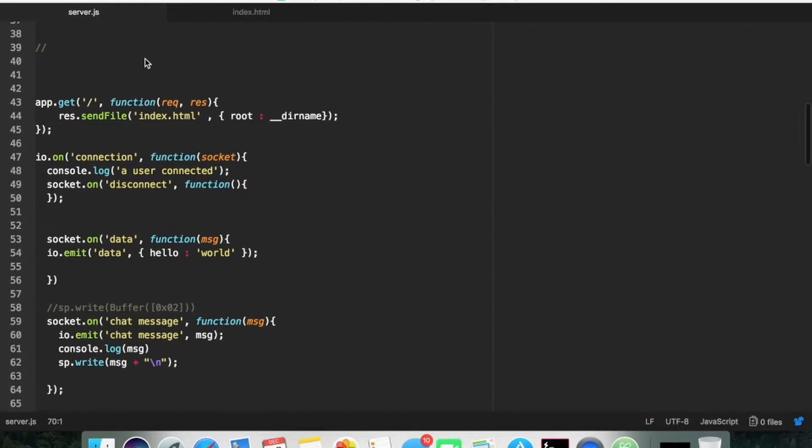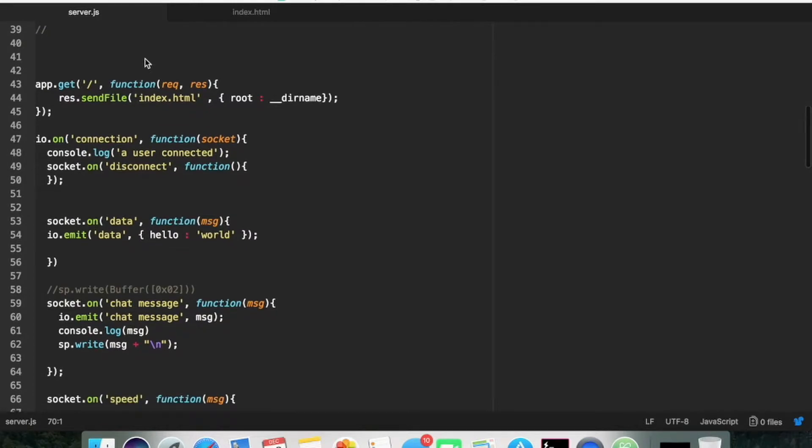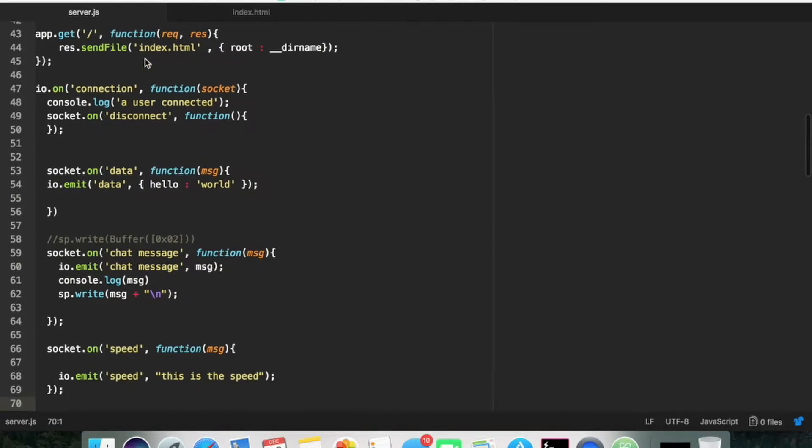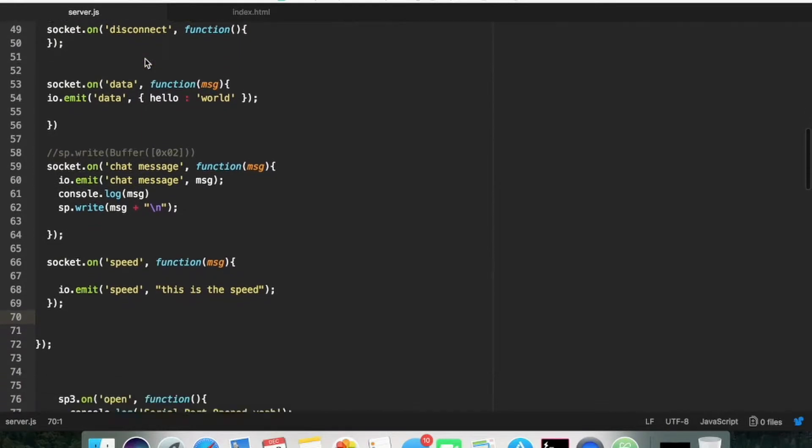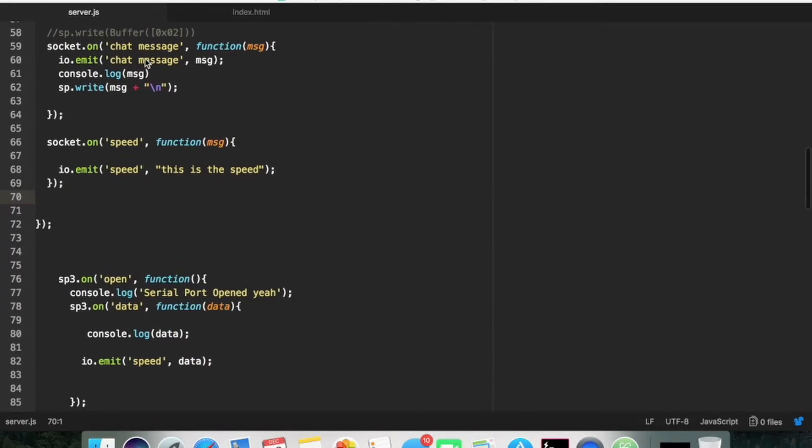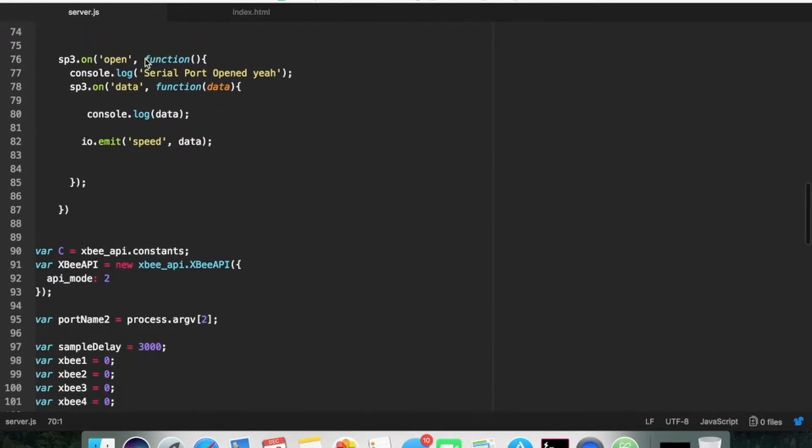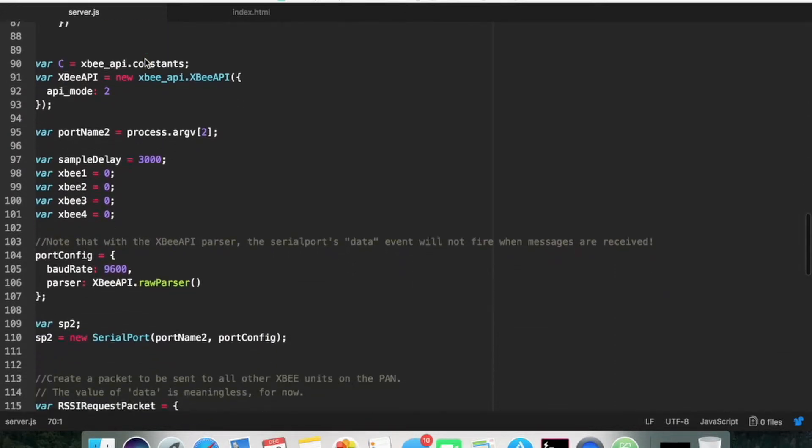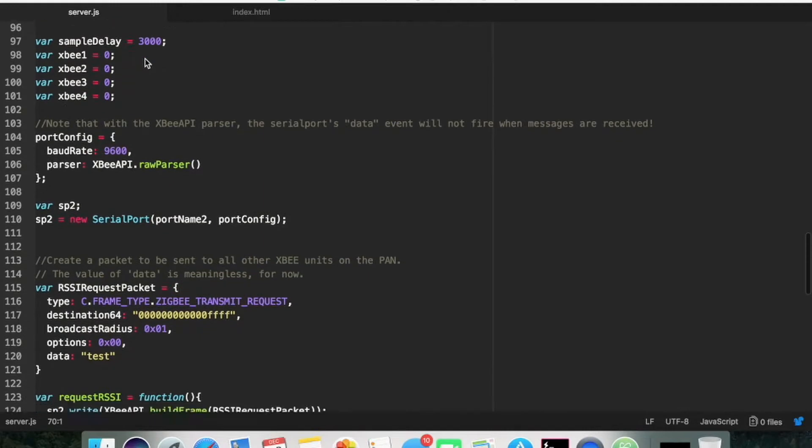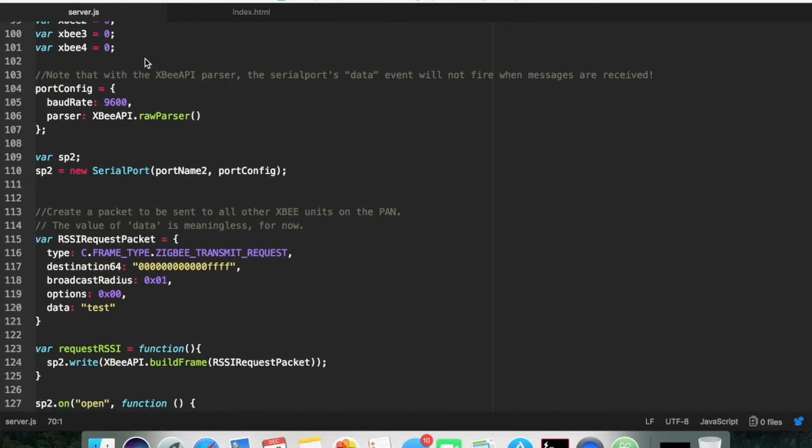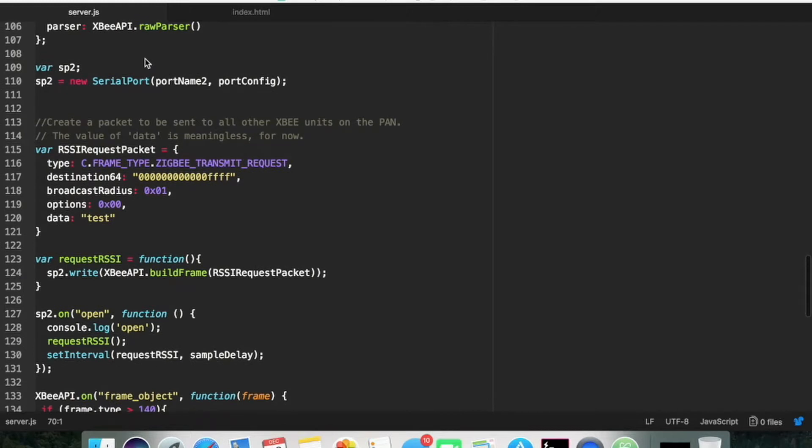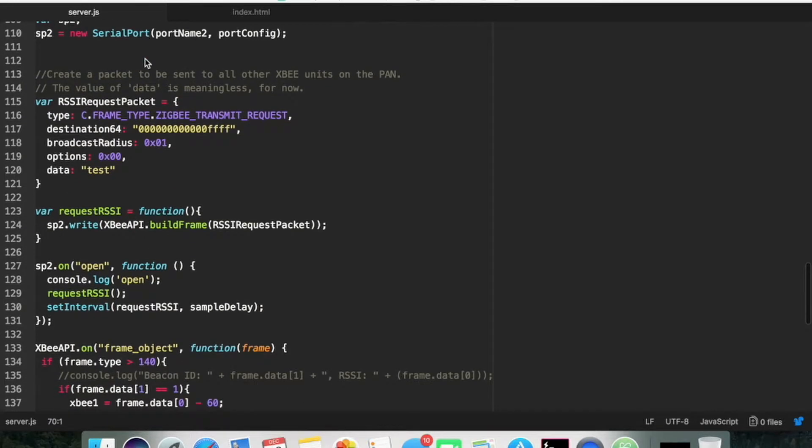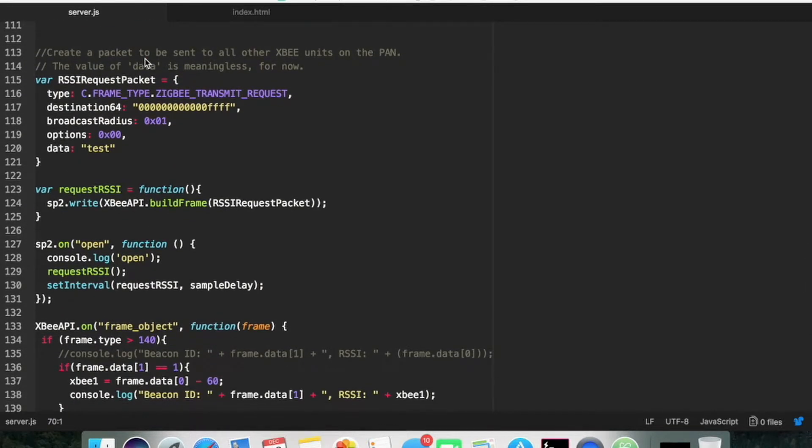Socket.io for chat message is the one that sends messages from the frontend with the function to the backend. We get the message, and you just SP write, which sends it to the Arduino to serial port. And so these are pretty much the XBs, all the calibration, trial iteration that happens. And this is how the XB communicates between each other through the serial port.